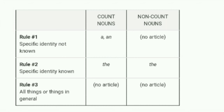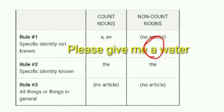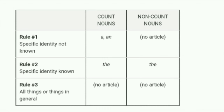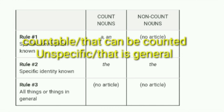Kuch rules dekhte hain ki kaise hum article ka use karte hain English language mein. Toh indefinite article 'a' or 'an' ka use unspecific noun ke pahle hota hai — unspecific ka matlab hota hai wo noun general ho, special nahi hona chahiye. Aur 'a' aur 'an' ka use hum sirf countable noun ke pahle karte hain. For example, 'please give me water' — if we say 'please give me a water', it sounds wrong. So we use 'a' and 'an' only before a countable and unspecific noun.